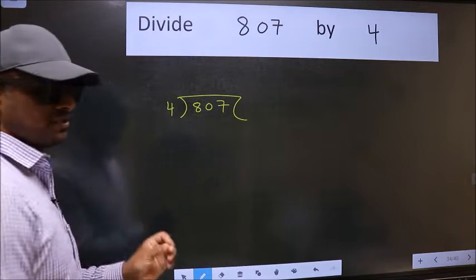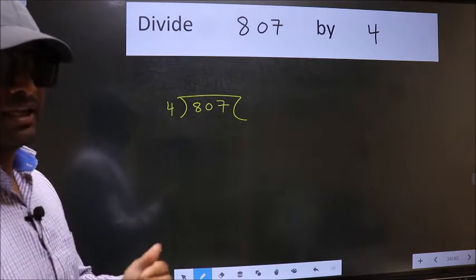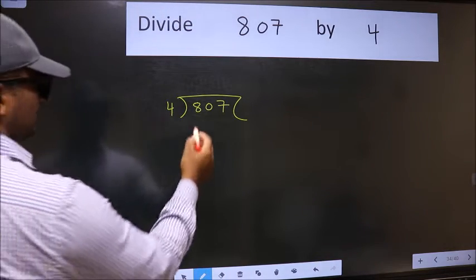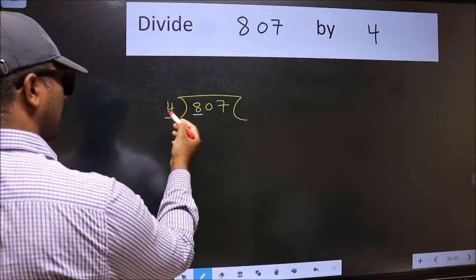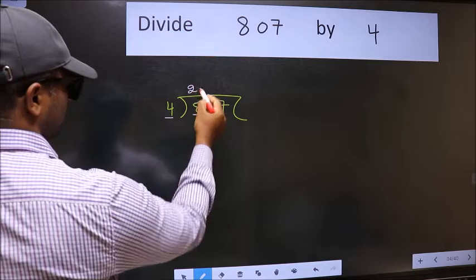This is your step 1. Next, here we have 8 and here 4. When do we get 8 in the 4 table? 4 times 2 is 8.